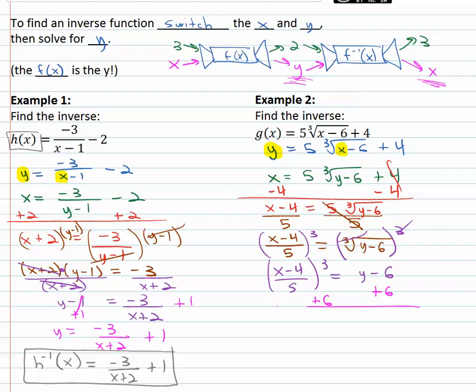Adding 6 to both sides, we'll get the y alone and y is equal to x minus 4 over 5 cubed plus 6.